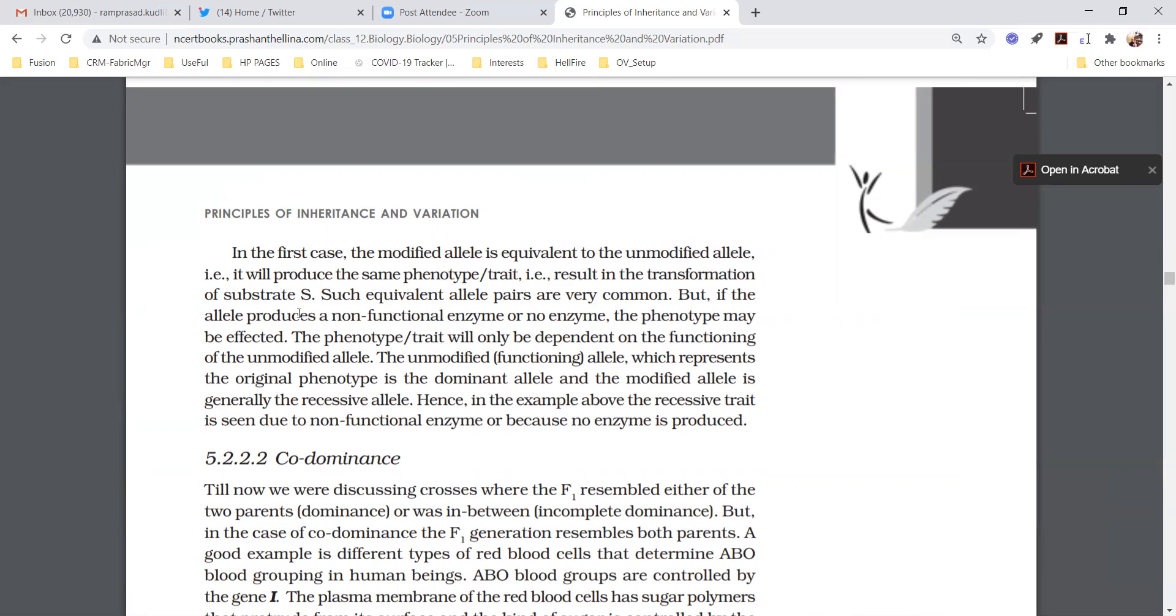Let us assume the first case. Normal allele, normal enzyme. Modified allele is also same as unmodified. Therefore, it will produce same phenotype, which results in transformation of substrate. Such equivalent allele pairs are very common.